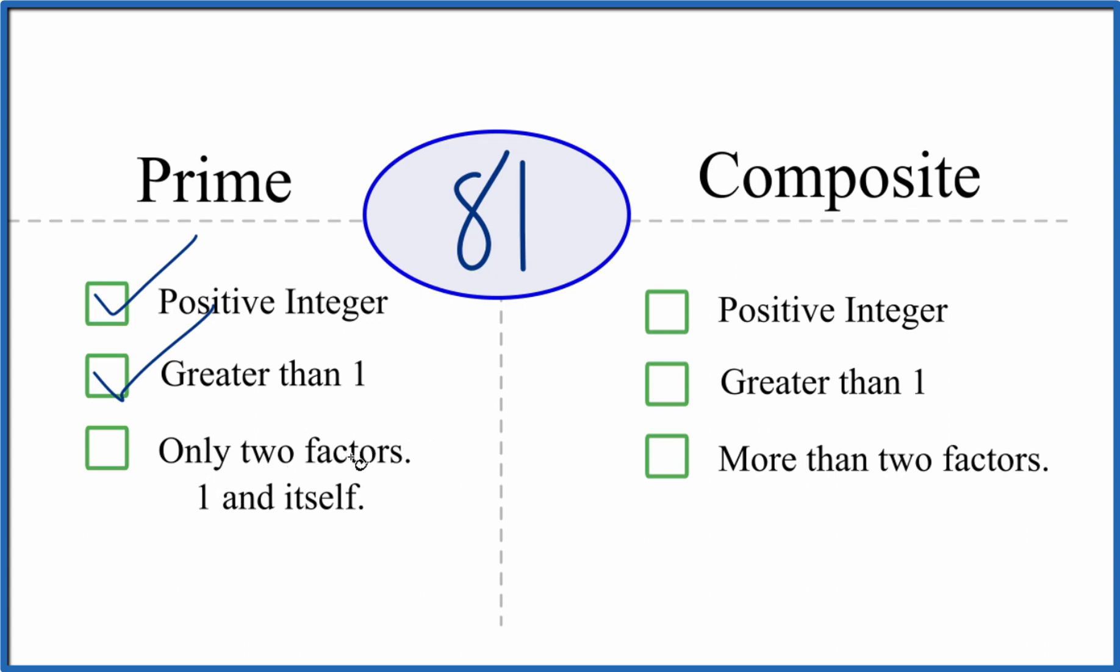Now there are only two factors for 81, 1 and itself, so 1 in 81. So we know 1 times 81. There's two factors. Are there any numbers that go into 81 besides 1 in 81? Turns out that 3 times 27, that equals 81, and 9 times 9 equals 81.